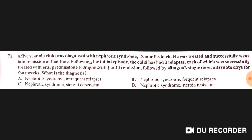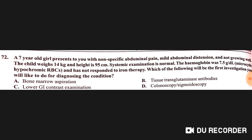A five-year-old child was diagnosed with nephrotic syndrome 18 months back, was treated, and went into remission. Following the initial episode, the child had three relapses, each successfully treated with oral prednisolone until remission, followed by 40 mg single dose on alternate days for four weeks. The diagnosis is nephrotic syndrome with infrequent relapses.